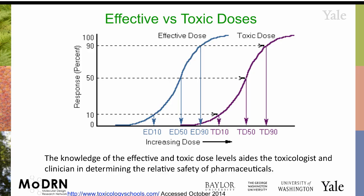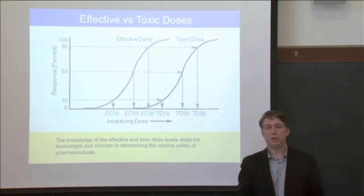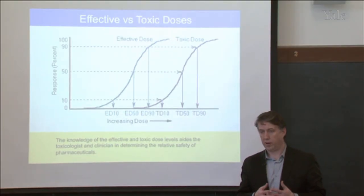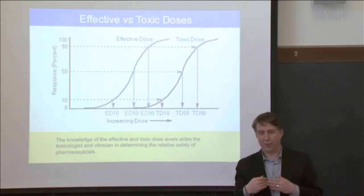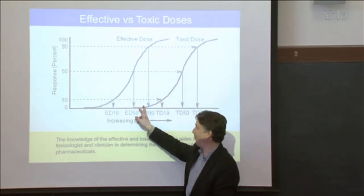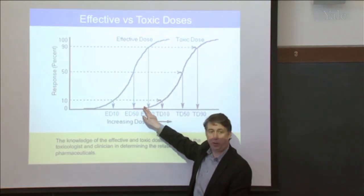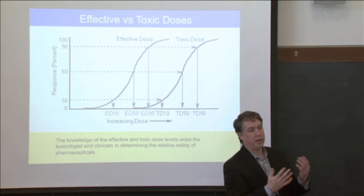The effective dose for 50% of the population is going to be at a place where there is no toxic effect. But if you want to get it to 90% of the population, it's going to be toxic for maybe 3% of the people. Does that sound familiar? When you're watching commercials for different drugs and at the end they're talking really fast listing off all those side effects — a very small percentage of the population are going to experience them. All of that comes from dose-response curves.